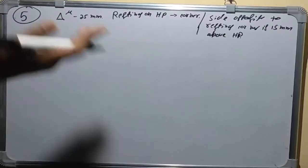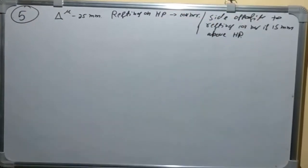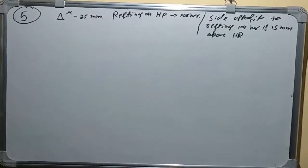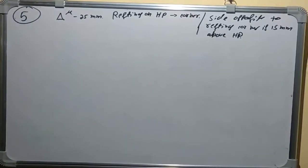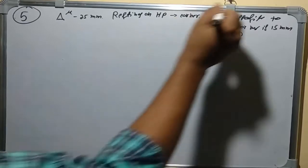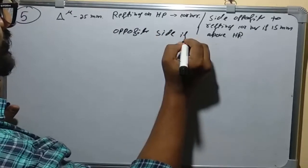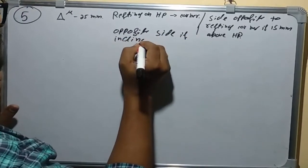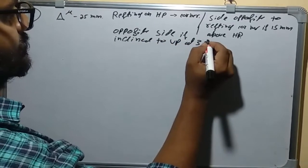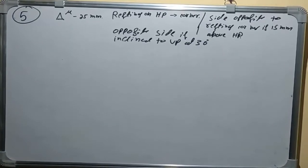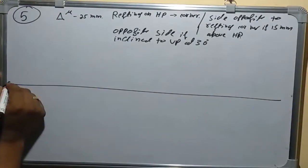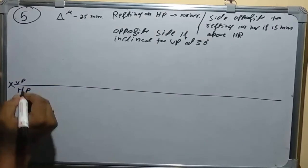Since distances above HP are shown in the VP, they have given the height as 15 mm instead of an angle. We will use that to complete the second step. For the third step, the side opposite to the resting corner is inclined to VP at 30 degrees. Before going to the explanation, we note that VP is above the XY line and HP is below the XY line, since all problems are done in the first quadrant.